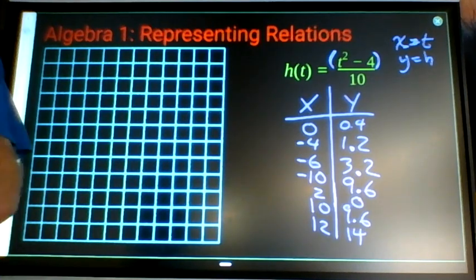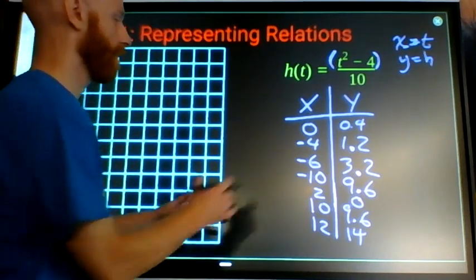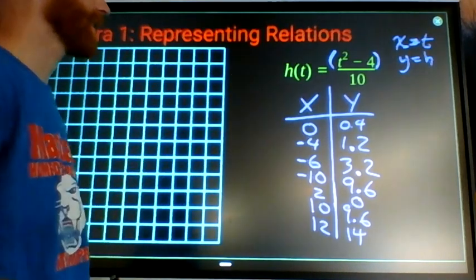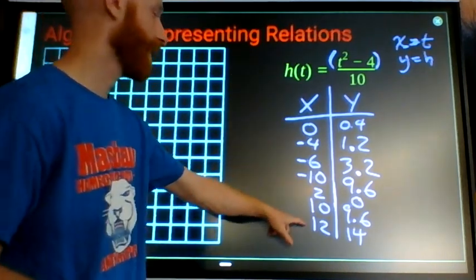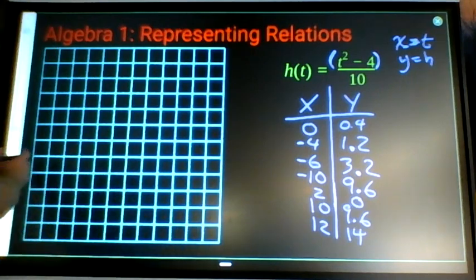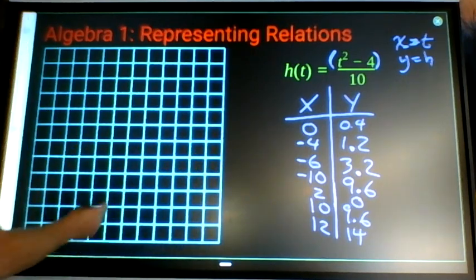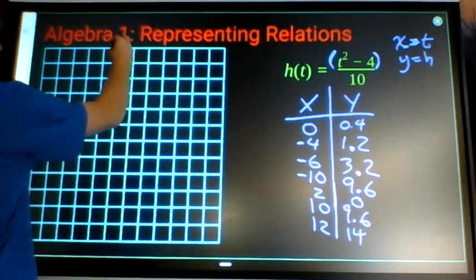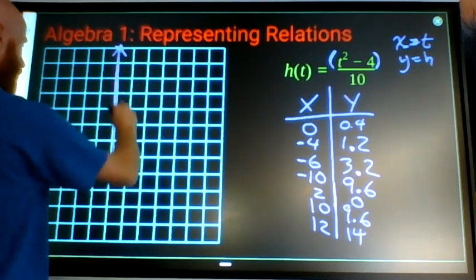So those are our values and from there we're looking kind of like skill number six. I have to say where am I going to put my axis and what am I going to count by so that I can fit all my data. So I need to get from negative 10 to positive 12 in the x direction, so I'm going to put my y-axis near the center.